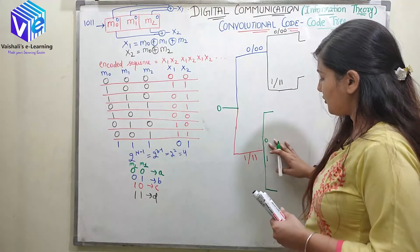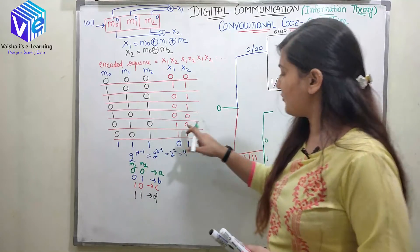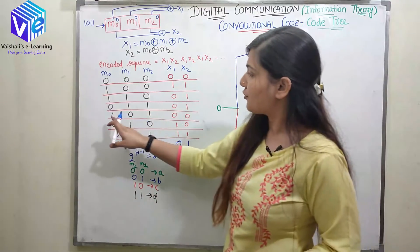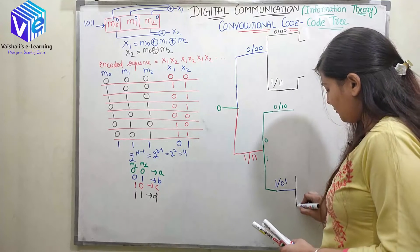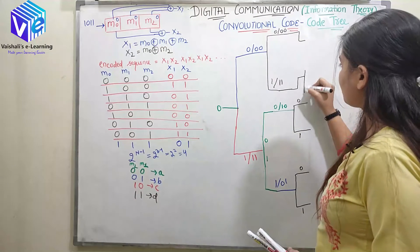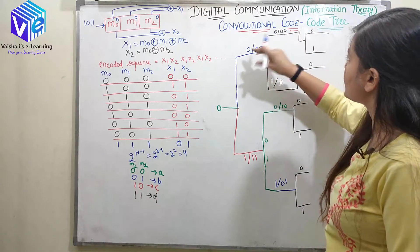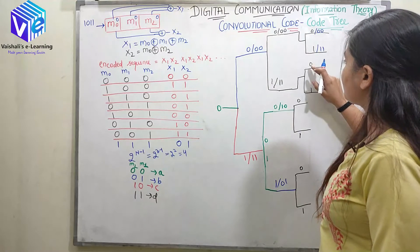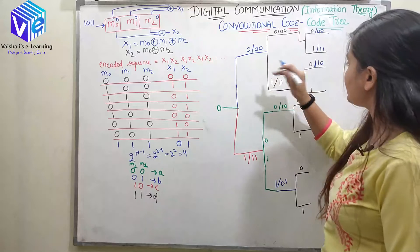Again I can have two possibilities. For m0=0, m1=1, m2=0 — state 010 — the output is 10. For state 110, the output is 01. Each node branches into two possibilities, either 0 or 1 input. For state 000 the output is 00, for state 100 the output is 10, and for state 110 the output is 01.